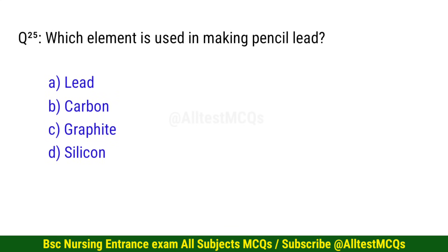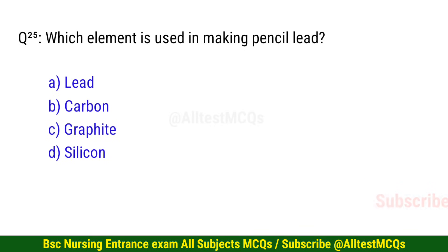Question number 25. Which element is used in making pencil lead? The correct option is C: Graphite.